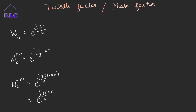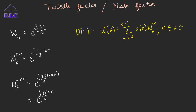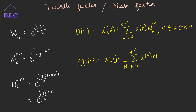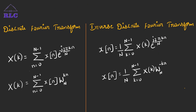Therefore, an N-point DFT can be represented as: X of k equals summation n ranging from 0 to N-1, x of n into W_N to the power kn, where k ranges from 0 to N-1. Similarly, IDFT is given by: x of n equals 1 over N, summation k ranging from 0 to N-1, x of k into W_N to the power of minus kn, where n ranges from 0 to N-1.